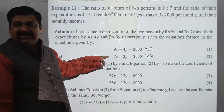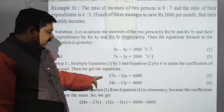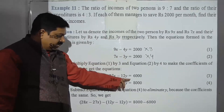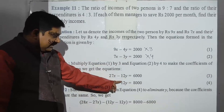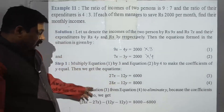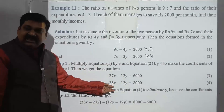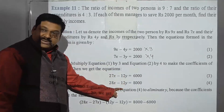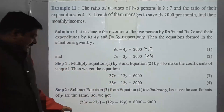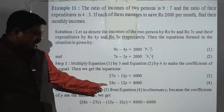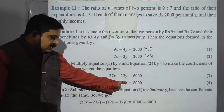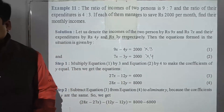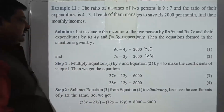And the second equation is multiplied by 4, giving 28x minus 12y equals 8000. Now the y coefficients are the same. When we subtract one from the other, the y terms cancel out, and we get minus x equals minus 2000, so x equals 2000.